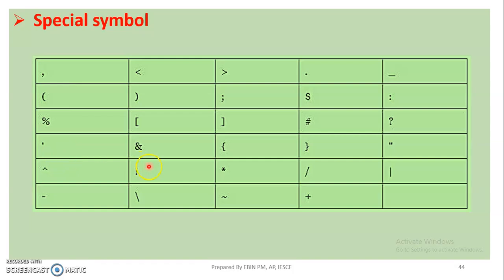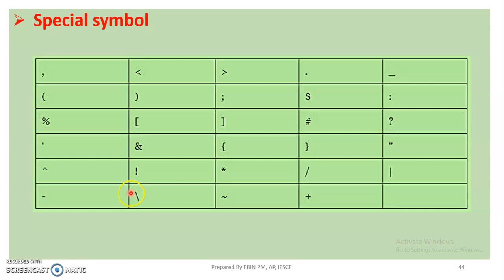Then question mark, comma, ampersand, closed braces, double quotes. This symbol is used for XOR operation, this symbol is called NOT, this is asterisk, then slash, then division is used, then minus, then negation, plus, slash symbol. These symbols are used in special symbols and special characters.